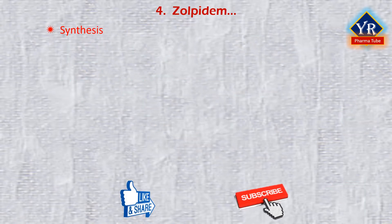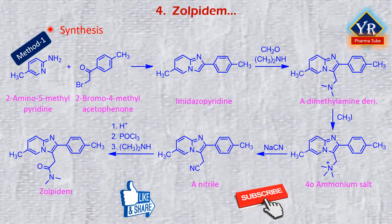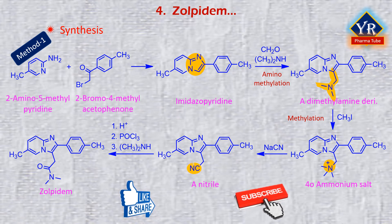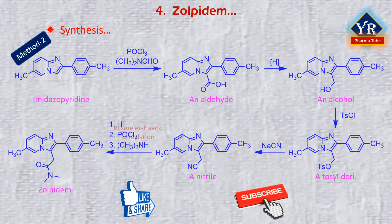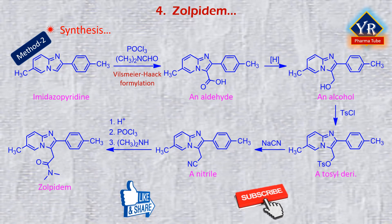Zolpidem can be synthesized by many different ways. The first synthesis involves reaction of 2-amino-5-methylpyridine with 2-bromo-4-methylacetophenone to produce imidazopyridine, which undergoes aminomethylation to form the amine. The obtained dimethylamino derivative was methylated with methyl iodide and converted into its quaternary ammonium salt. Reaction of this salt with sodium cyanide produces a nitrile, which after acidic hydrolysis is transformed into the corresponding acid chloride that upon reaction with dimethylamine produces the desired dimethylamide, zolpidem.